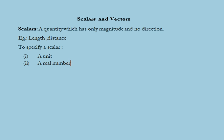In order to specify a scalar quantity we need two things: first, a unit in terms of which it is measured, and second, a real number which can be positive, negative, or zero.